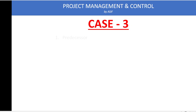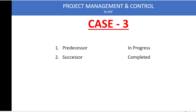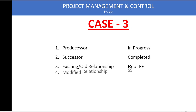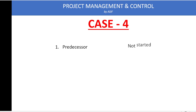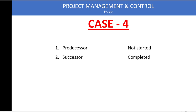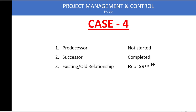The third case is that the predecessor is in progress and the successor is completed, linked with Finish-to-Start or Finish-to-Finish — this link needs to be modified to Start-to-Start. The fourth and final case is that the predecessor has not started and the successor is completed, so the successor does not need the predecessor. Regardless of what link they are connected by, it should be removed.